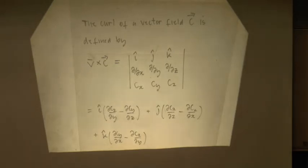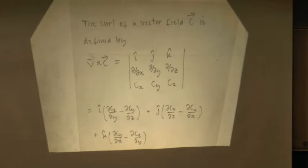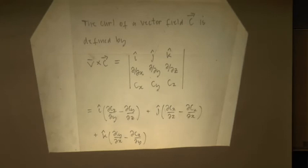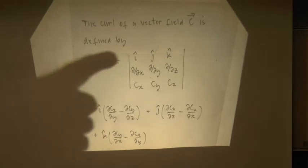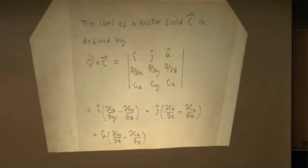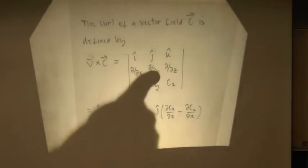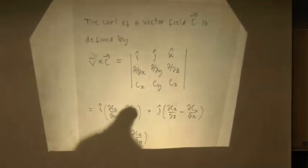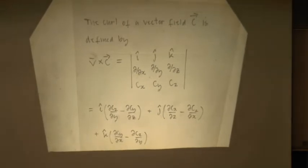The important thing is actually to be convinced that these vector identities are true, so that when we come back you won't think Martin used some bit of jiggery-pokery mathematics to prove the Maxwell unification theory. First of all, we've got to know what the curl is — you can represent it as this determinant. The x component of the curl is d/dy of Cz minus d/dz of Cy, with similar relationships for the y and z components of the vector field. That is the basic definition of the curl.